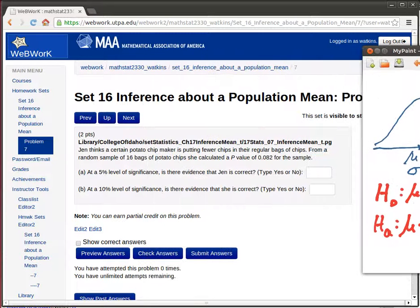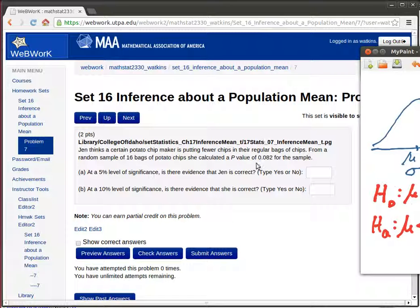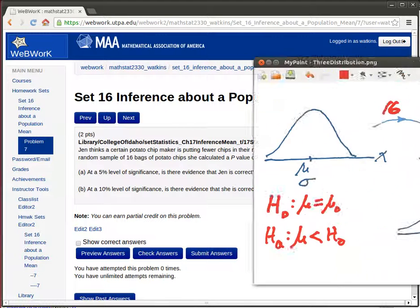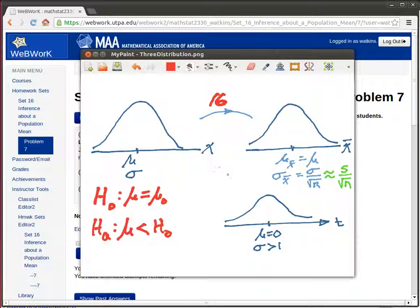When we do that we discover that we get some mean. They don't tell us what that mean is, but they tell us that Jen continues her study and finds a t-value and discovers this t-value.